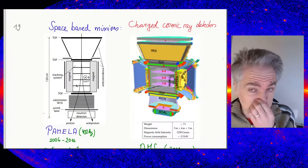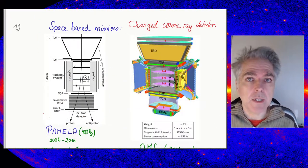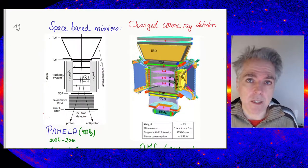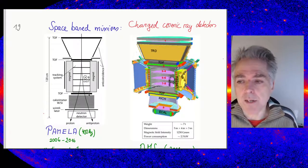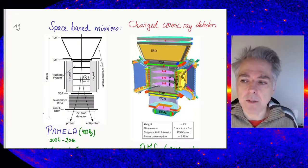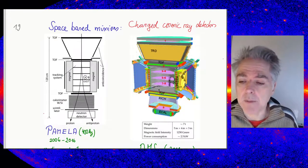For space-based missions, you would take such a detector and bring it into near-Earth orbit, either as a free-flying satellite like the PAMELA satellite, or attach it to the space station as a platform. That's been done with AMS, the Alpha Magnetic Spectrometer.